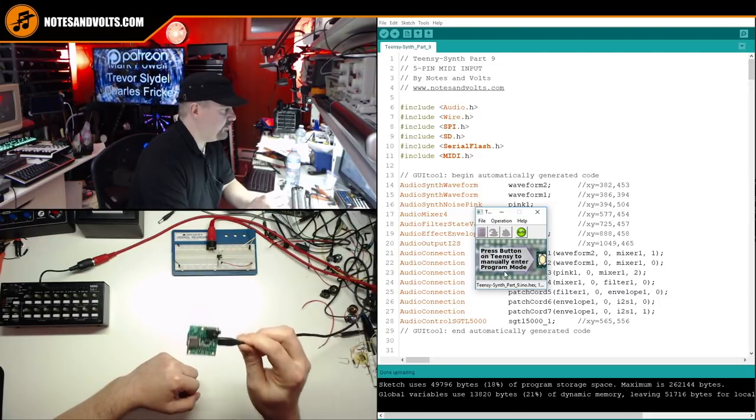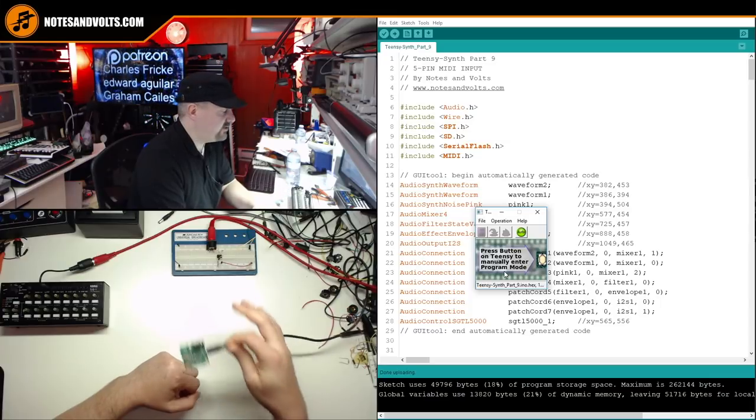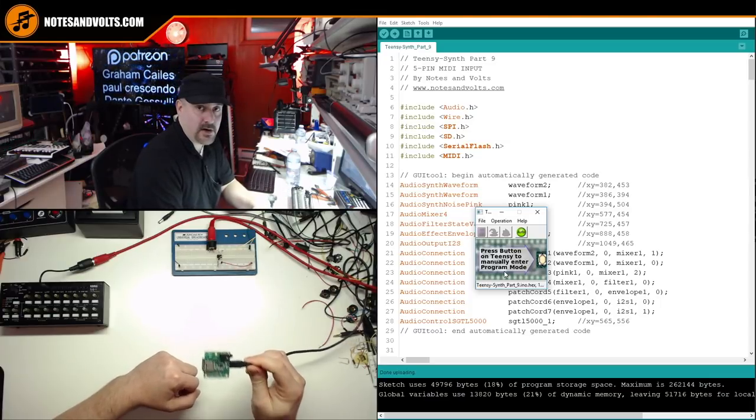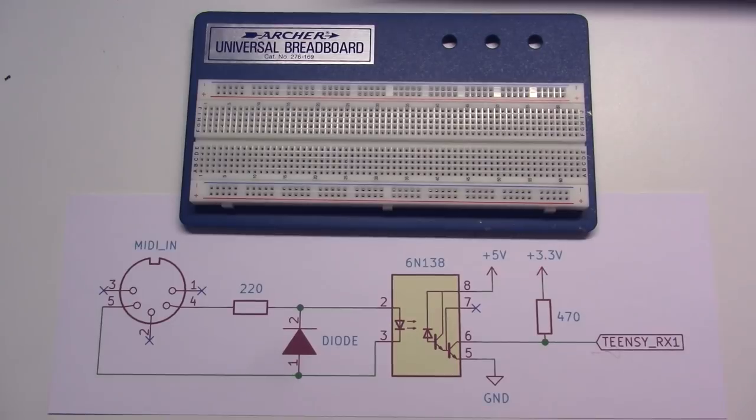Now that our Teensy board is programmed, we need to build the MIDI input hardware. So this is the circuit we're going to build, and this is a standard MIDI input circuit. I actually got this from the Teensy website, so it's the official circuit that they recommend. I've actually done an in-depth video on how MIDI circuits work, but I'll give you a quick rundown just for this video.